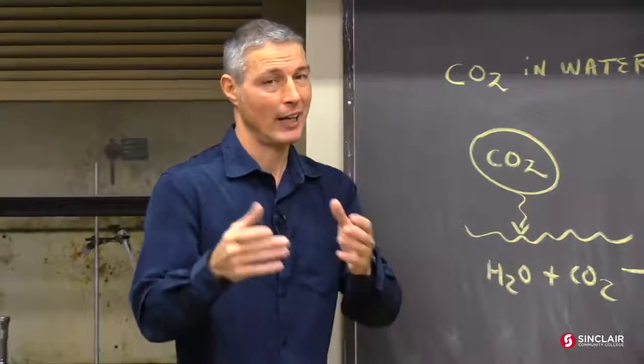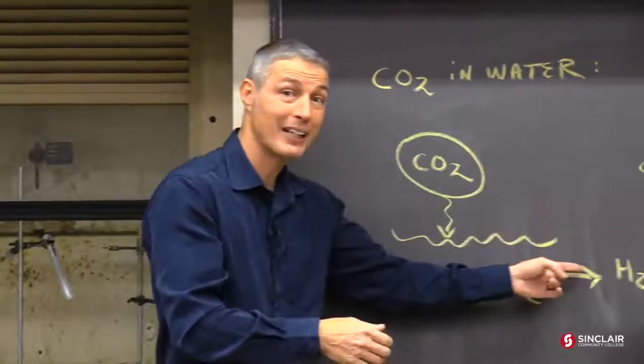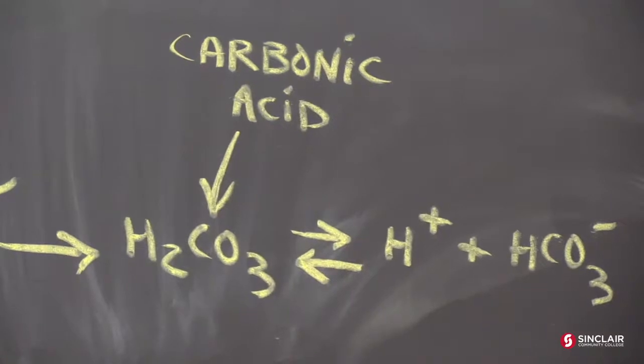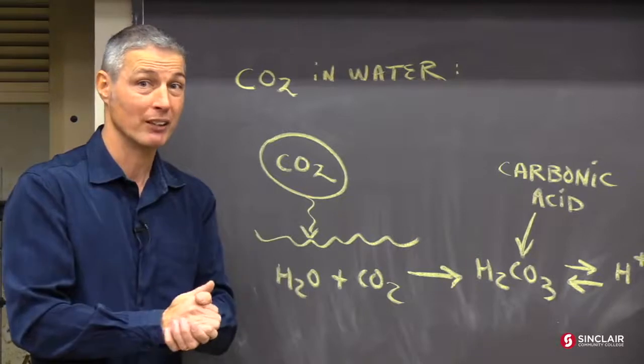There's a hidden acid in the air, carbon dioxide. Actually, when carbon dioxide dissolves in water, it'll form an acid called carbonic acid. And that is a mild acid. But nonetheless, it's an acid and it'll make the pH go below 7.